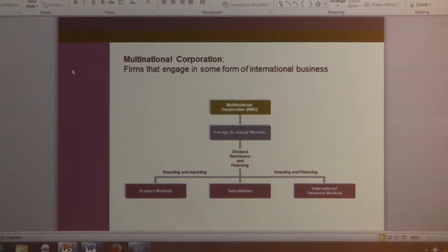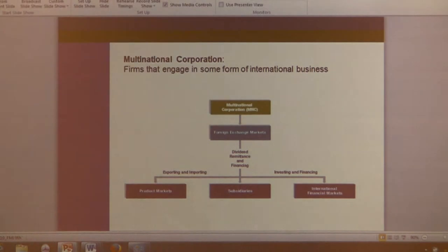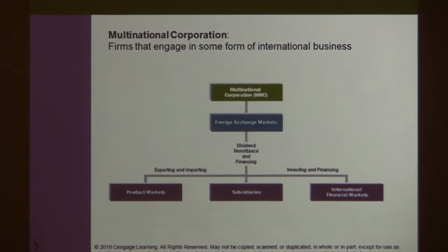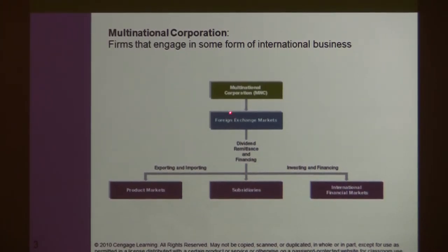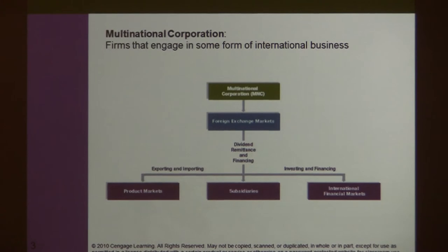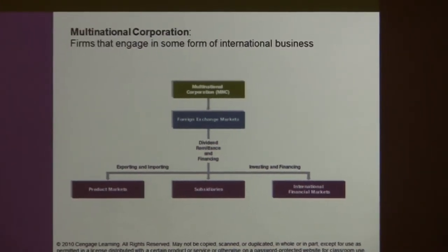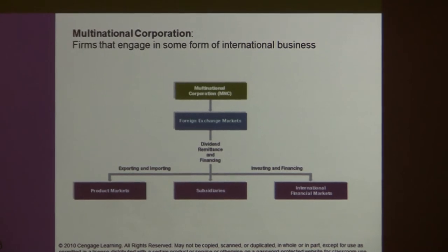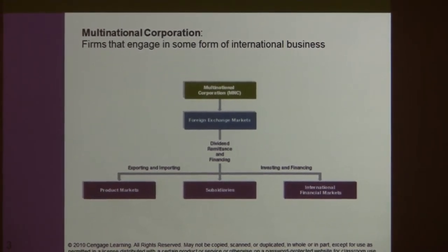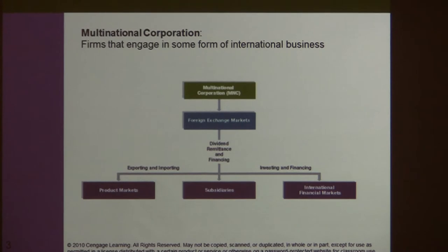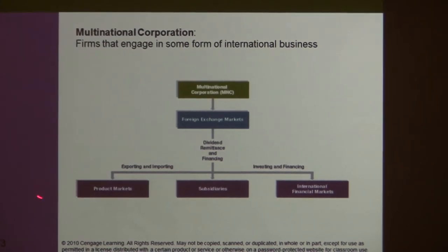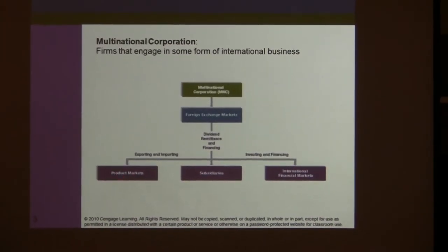When we look at a firm, firms do business in different ways. The first is a multinational firm that deals in product markets. As an example, Apple will sell their iPhones, iPads, and iPods all over the world — in Europe, Asia, China, India, and South America. This is how a U.S. multinational deals in the product markets.